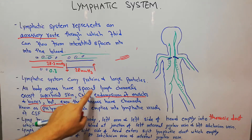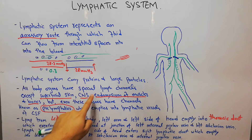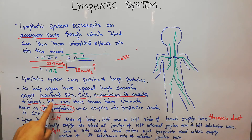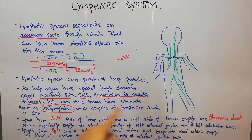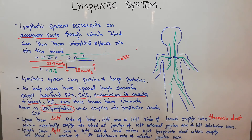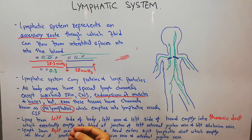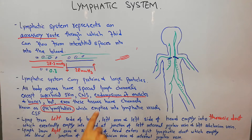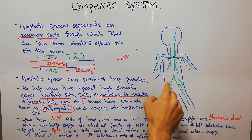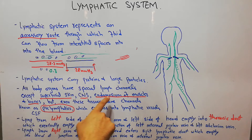All body organs have special lymph channels except the superficial skin, central nervous system, and endomysium of the muscles and bones. Even these tissues have pre-lymphatics which empty into the lymphatic vessels. In the central nervous system — the brain and spinal cord — the pre-lymphatics carry fluid from the interstitium and empty into the cerebrospinal fluid, while pre-lymphatics in bones, superficial skin, and muscle endomysium empty into the lymphatic vessels.